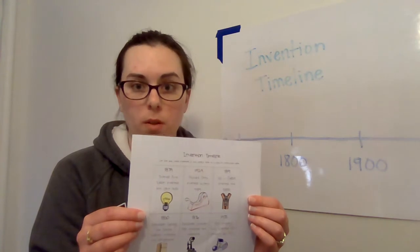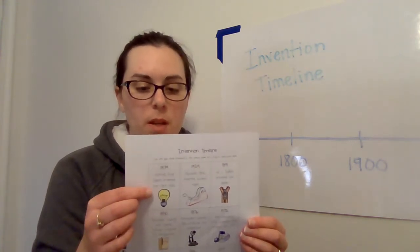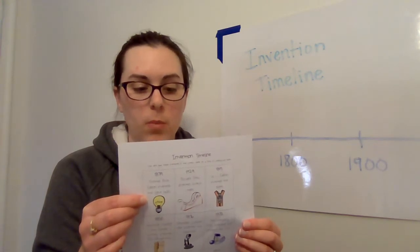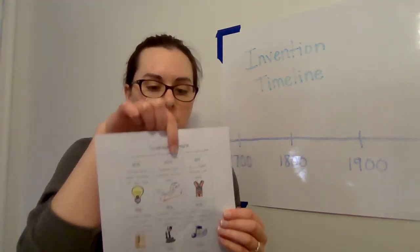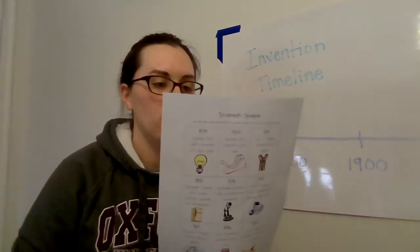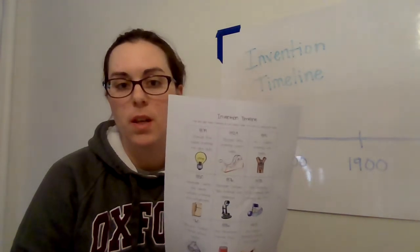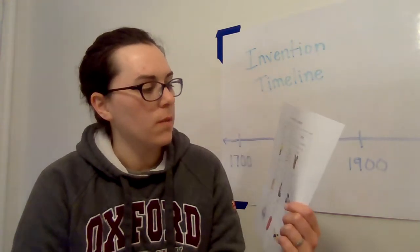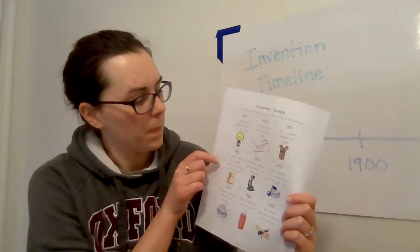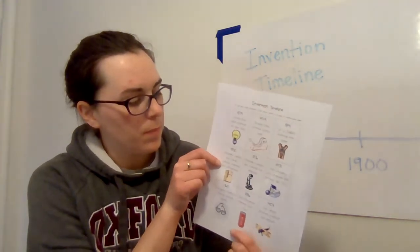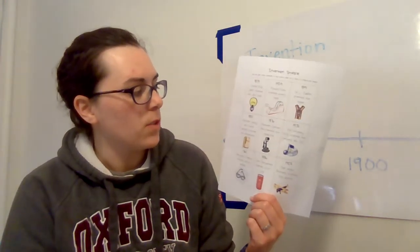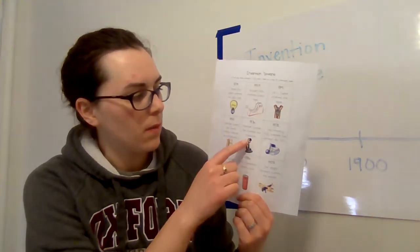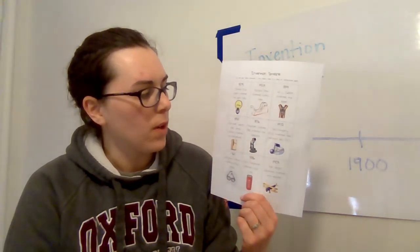1879 Thomas Alva Edison invented the light bulb. 1929 Richard Drew invented scotch tape. 1891 W L Judson invented the zipper. 1850 Alexander Twining and James Harrison invented the refrigerator. 1876 Alexander Graham Bell invented the telephone.